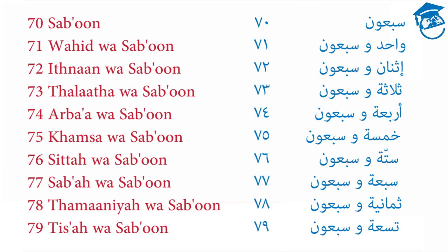70 is Saba'un. If we want to say 71, we say Wahed was Saba'un. 72 is Ithnan was Saba'un. 73 is Thalatha was Saba'un. 74 is Arbat was Saba'un. 75 is Khamsa was Saba'un. 76 is Sitta was Saba'un. 77 is Saba was Saba'un. 78 is Thamanya was Saba'un. And 79 is Tissa was Saba'un.